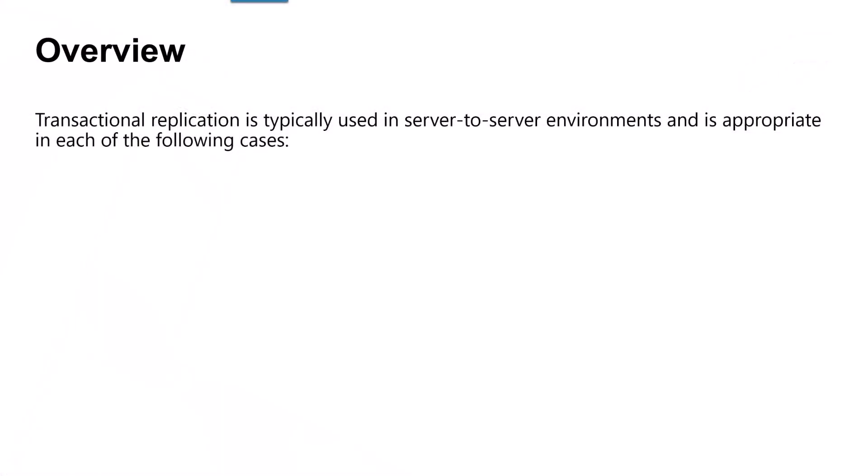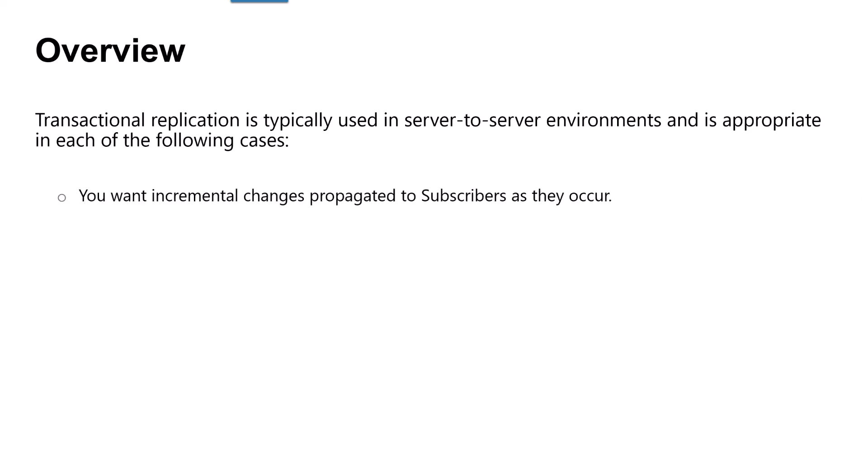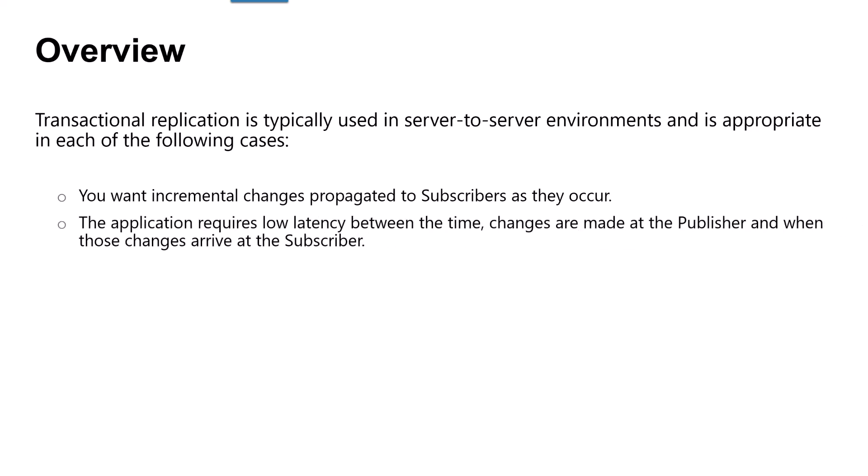Transactional replication is typically used in server-to-server environments and is appropriate in each of the following cases. You want incremental changes to be propagated to subscribers as they occur. The application requires low latency between the time changes are made at the publisher and those changes arriving at the subscriber.